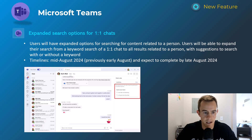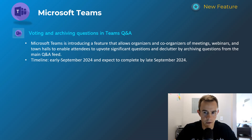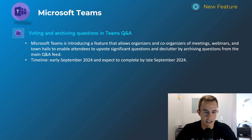Next one is for webinars or live events where you're doing Q&A. This gives the ability for users to upvote comments, which I think is actually kind of cool. There might be a lot of comments in some use cases, and you can see as the meeting organizer which comments are really popular amongst the crowd, so you can prioritize them — especially if you have a limited amount of time. This will happen early September, complete by late September.